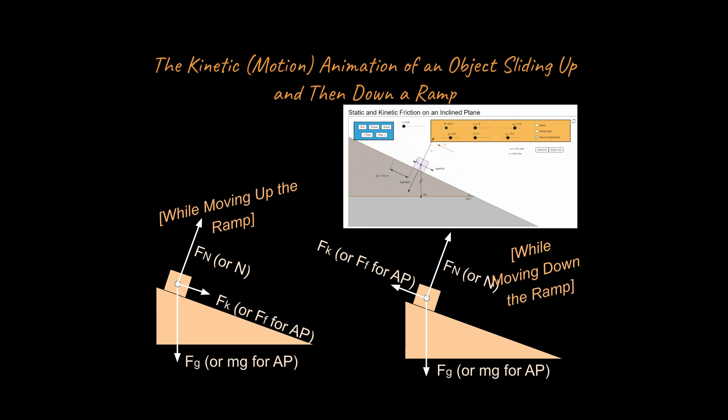Let's take a look at what the free body diagram would look like in two different scenarios for the first animation. So for this object, when it is pushed initially, it slides up, and then it slides back down. While it's moving up the ramp, you've got your normal force,